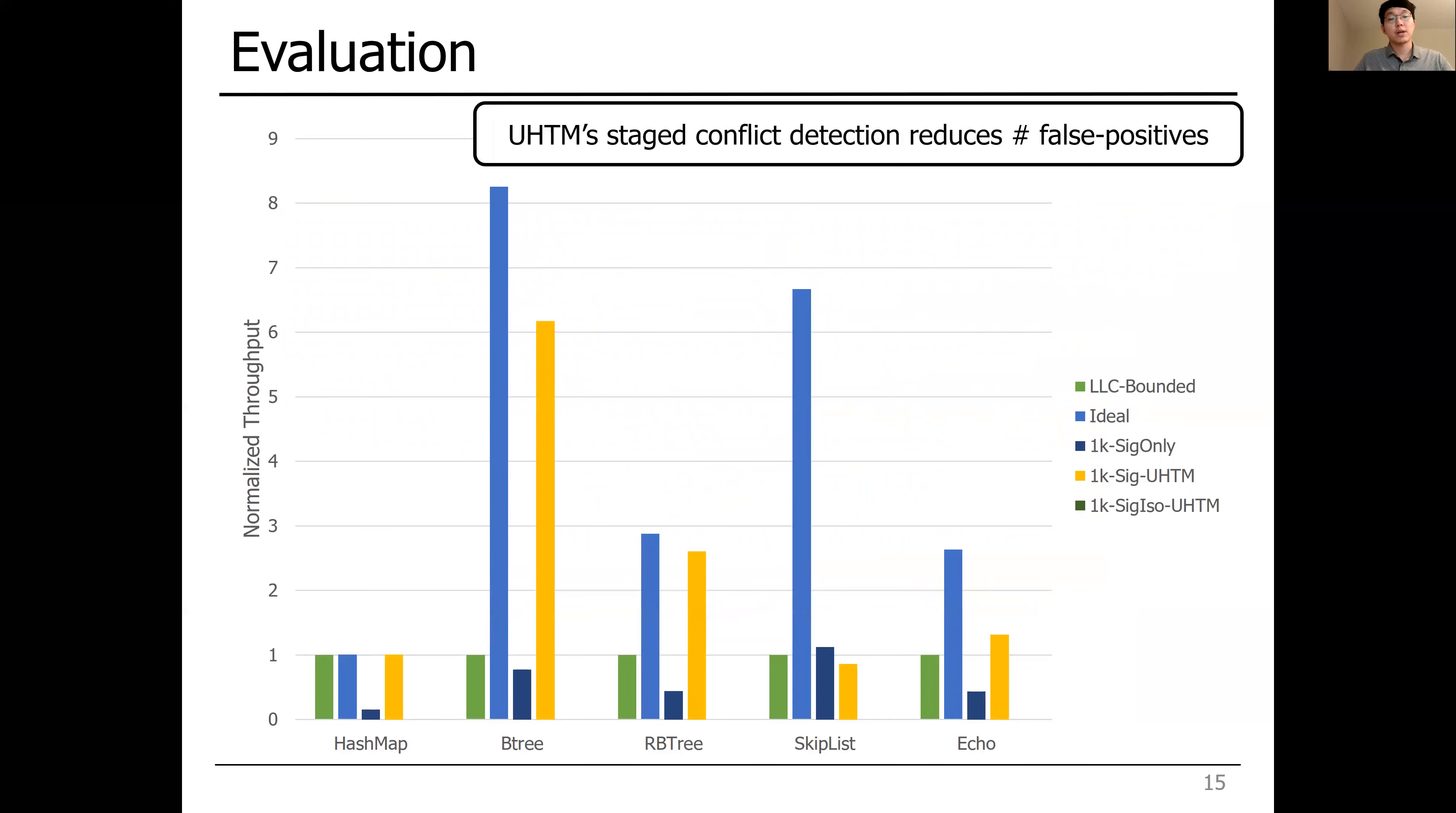However, UHTM drastically reduced the number of false-positives, making UHTM outperform the baseline. Furthermore, UHTM achieves throughput similar to the ideal design, except for Skiplist, with the signature-isolation technique. For more experiments, please refer to the paper.